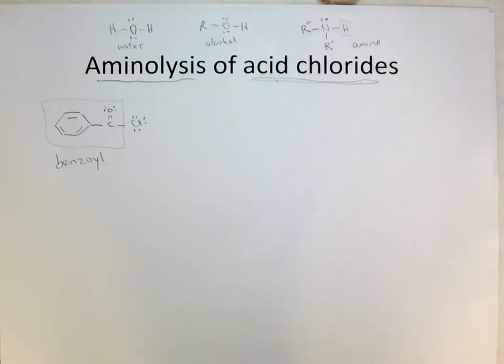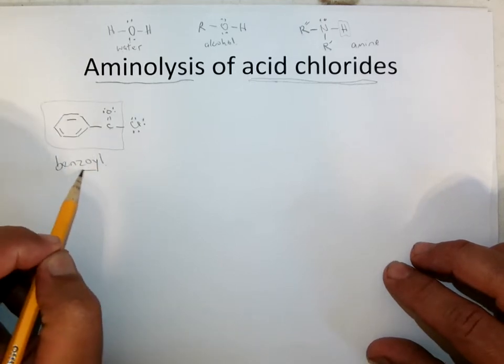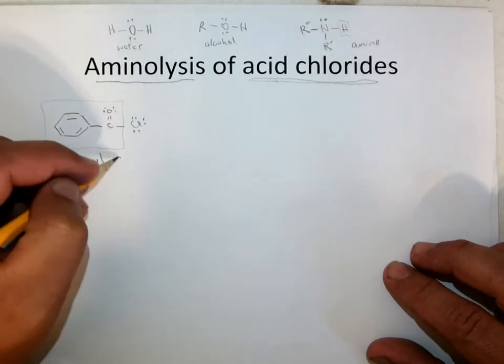So you may have heard of benzoyl peroxide, usually pronounced benzoyl peroxide, used in acne medications. But the phenyl-carbonyl combination is a benzoyl group. So this is benzoyl chloride.